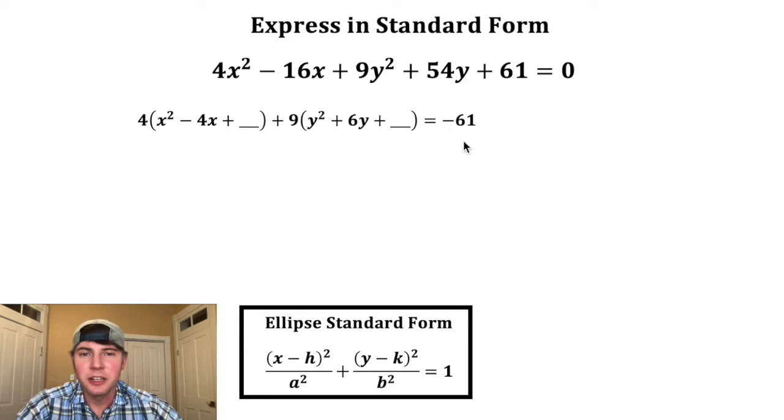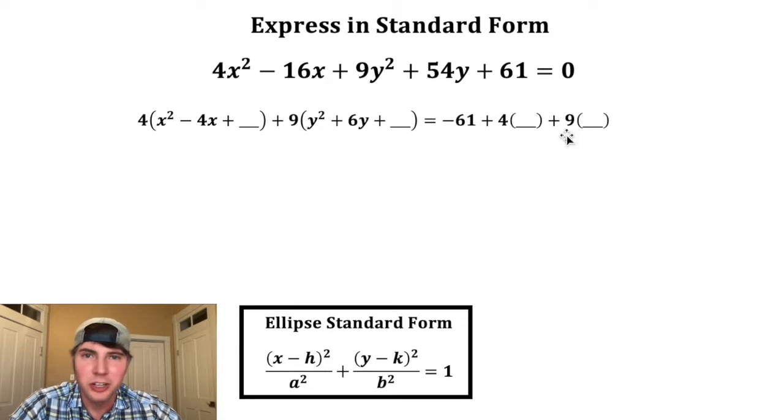And then let's bring the 61 to the other side. So it's equal to negative 61. And then we're gonna say plus four times this space plus nine times this space. So we're just balancing whatever we put in these spaces on this side, we also wanna put on this side.